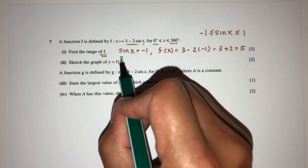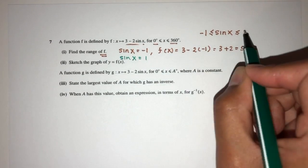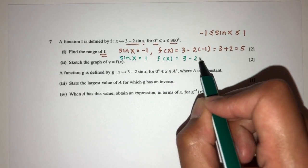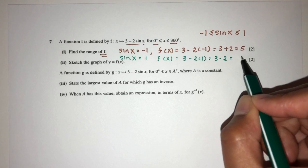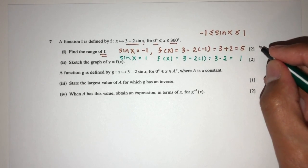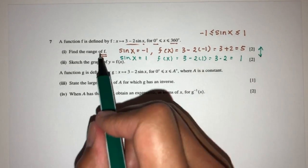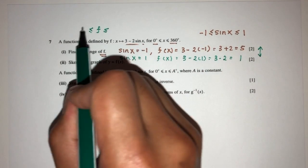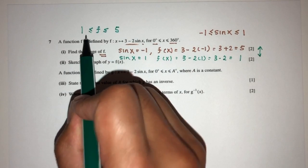And then what if sin of x is equal to 1? That will be f of x will be 3 minus 2 times 1, 3 minus 2, that should be 1. So the range is between those two values, so we can write the range of f, is between the value of 1 and 5 for part 1.